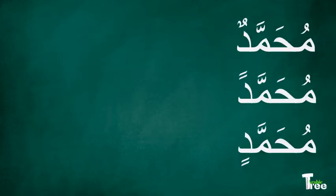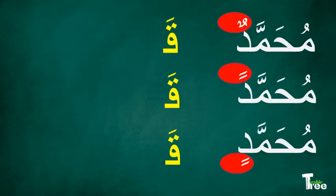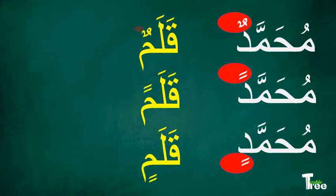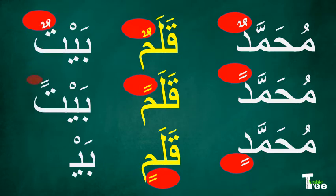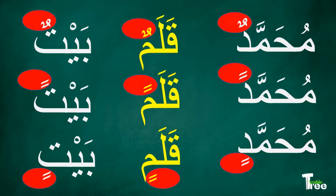A noun can be identified by tanwin, sometimes called dhammataini, fathtaini, and tasrataini. In Urdu you call it do-peish, do-zabr, and do-zay. Only a noun can carry these marks — no other word ends with these marks except a noun, hence this is one of the identification marks of a noun.